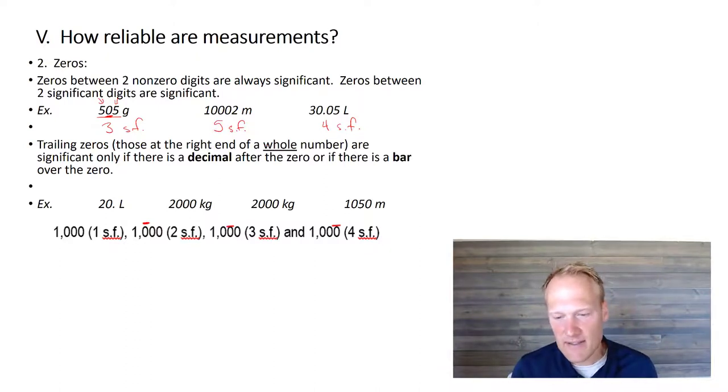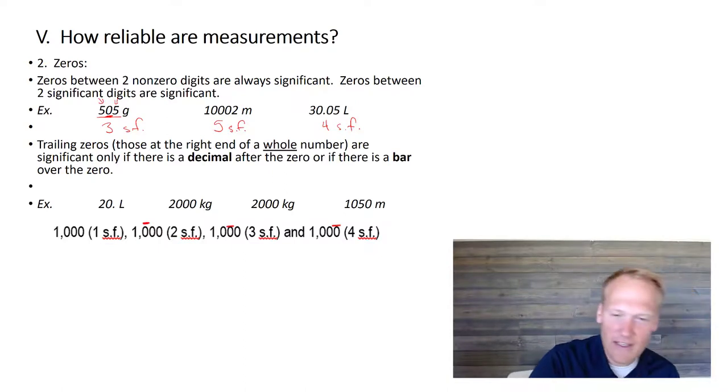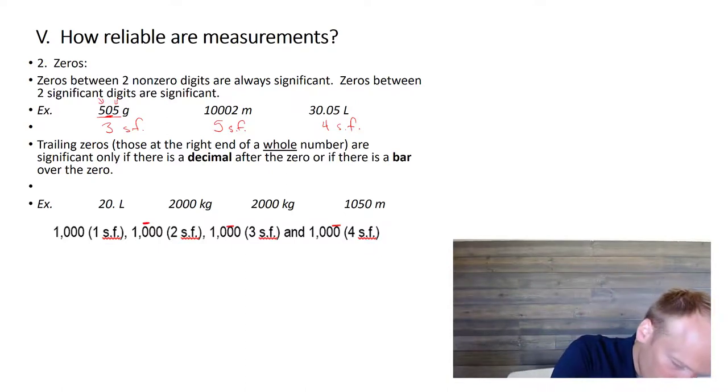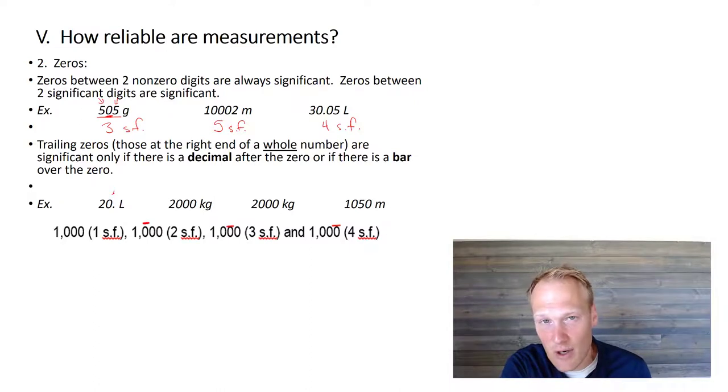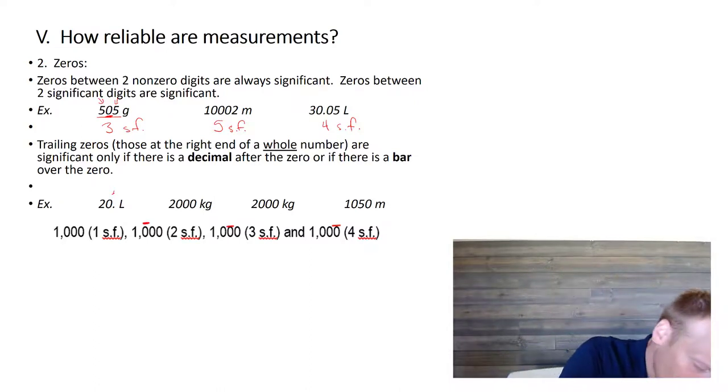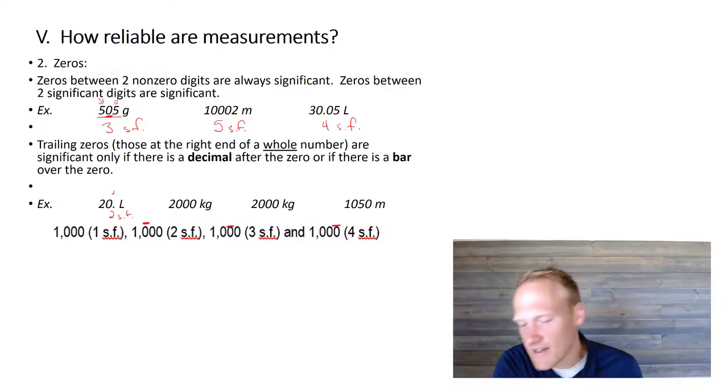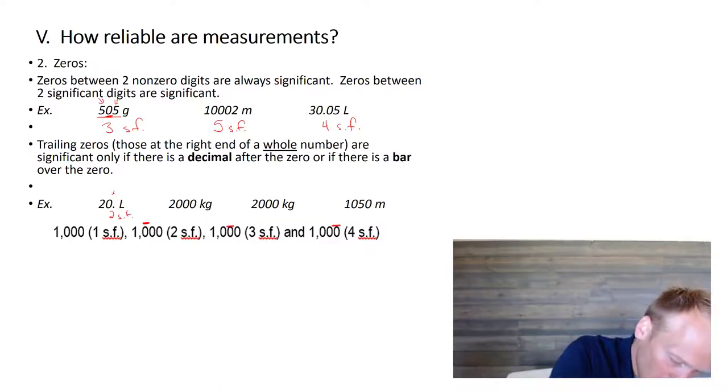Zeros that are trailing are significant if a decimal is present. So, if you look here, here's a decimal. So, that means that the scientist was trying to tell us that this zero was measured. And therefore, this would have two sig figs. The two and the zero. This number 2,000 here, these zeros here, there's no decimal. And therefore, the scientist is trying to let us know that those zeros were simply placeholders and that they were not measured. So, the only significant digit in this number is the two.